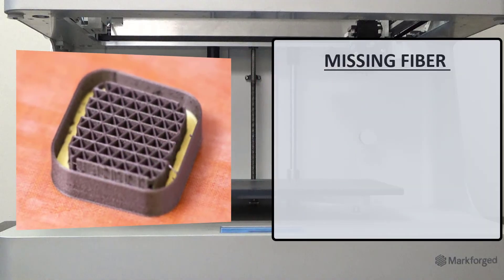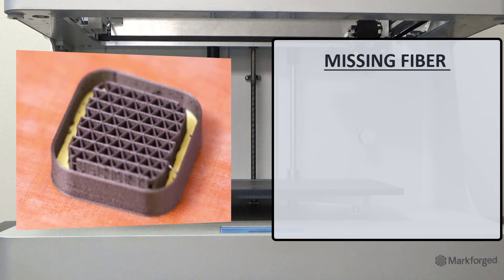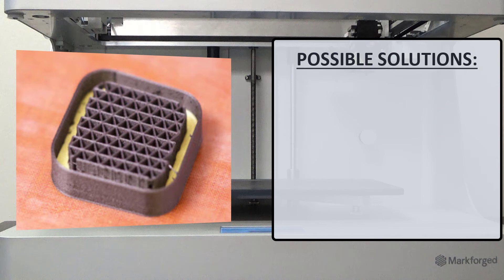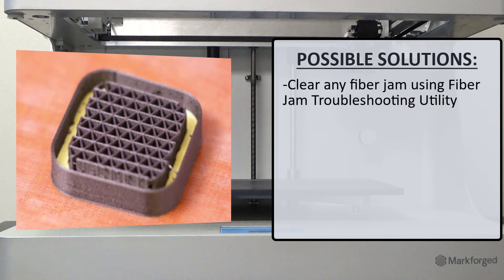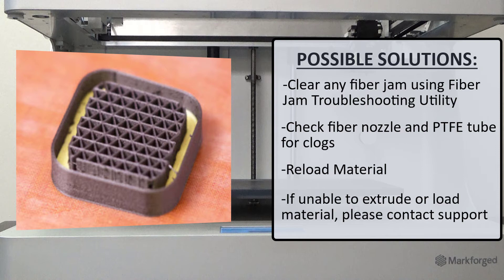What can we do if we notice that we have missing fiber? Fiber missing from a part over a series of layers indicates an extrusion problem or even a fiber jam. Missing fiber can cause dislocations or stringing plastic material, which can damage your printer in turn. Some common causes could be a fiber jam, fiber extruder failure, or simply being out of material. The recommended troubleshooting steps would be to first clear any fiber jams following the fiber jam troubleshooting utility. If your printer did not detect the jam, check the fiber nozzle and the PTFE tube for clogs, then reload material. If the extruder is not able to turn or load material, please contact support.